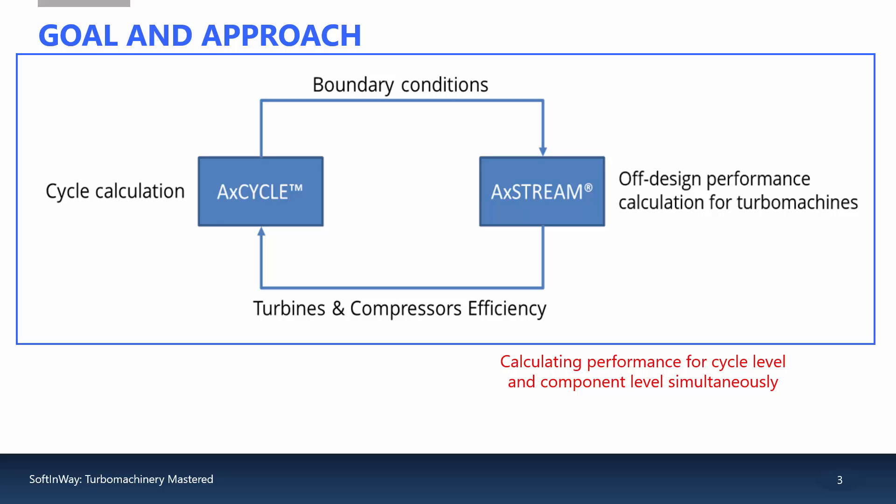Here we want to simulate off-design conditions for a given system at different part load points. For each point, we are not only analyzing the performance of the cycle, but we are accounting for the involved turbo machine's performance, iterating automatically until there is a match between component efficiencies in the cycle and the detailed turbo machine simulations.